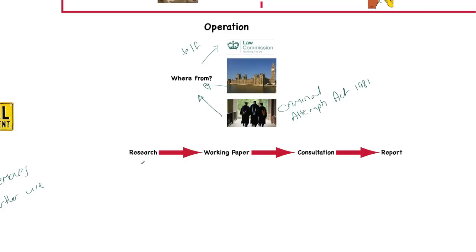The way it works is that the Law Commission will carry out some research and then write a working paper. That working paper will be the starting point for consultation between Parliament, academics, members of the Law Commission, members of the judiciary, and members of the legal profession, before eventually writing a report. It's the report that goes to MPs and Parliament to look at whether the work of the Law Commission is going to be taken on board and made into new law.